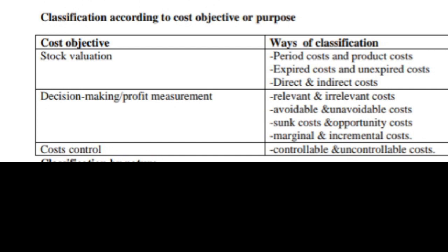When it comes to decision-making, we have the relevant and irrelevant costs. We have those costs that can be avoided and those that cannot be avoided. We have the sunk costs and opportunity costs, then marginal and incremental costs. When it comes to stock valuation, we have the period costs and product costs, expired costs and unexpired costs, and also the direct and indirect costs.